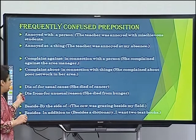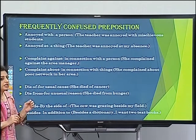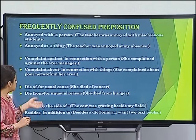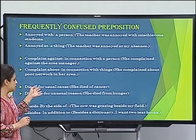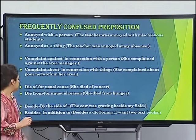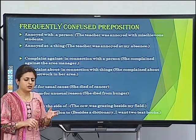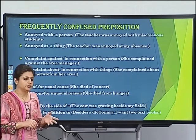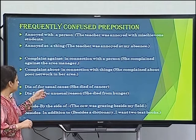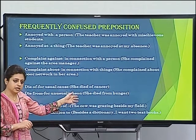'Die of' — when someone dies of a usual reason, we use 'died of.' For example, she died of cancer. When the reason is very unusual or uncommon, then we use 'die from.' For example, she died from hunger.